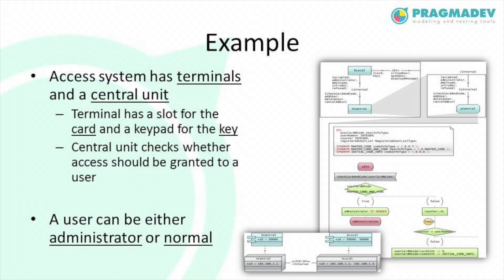We applied this solution to an access control system specification. This is a simple system composed of terminals and a central unit, where each terminal has a slot for a card and a key. The user enters the card and the key, and the central unit checks whether access should be granted. A user can be either an administrator or a normal user; an administrator is allowed to add more users. We started with a simple test case: getting access as administrator and exiting administrator mode.